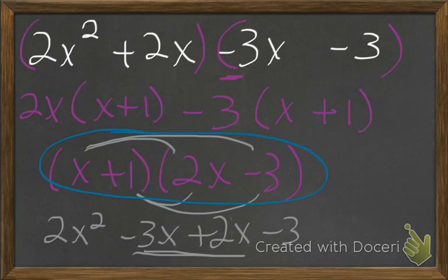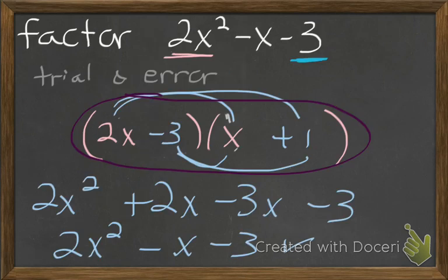Okay, this was the AC method. Now let's compare it back to our original that we had when we did trial and error. Same thing. Order doesn't matter. You still had an x plus 1 and a 2x minus 3. So those are the two different ways to factor.